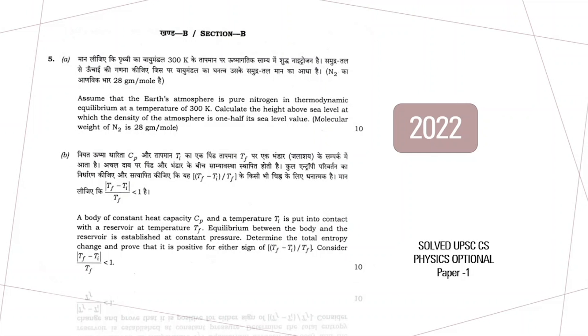Hello everyone, in today's video we will be solving these two questions. In the first question, we are given Earth's atmosphere which is purely nitrogen, in thermodynamic equilibrium at a temperature of 300 Kelvin.